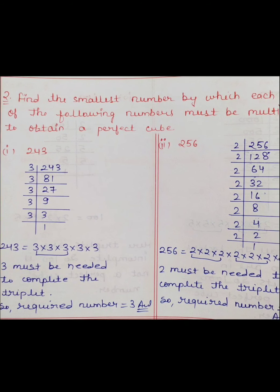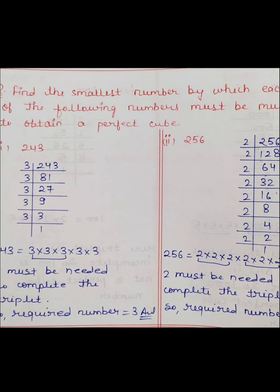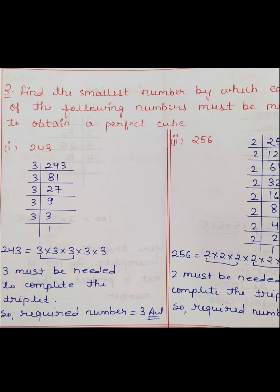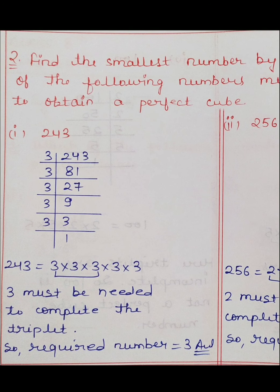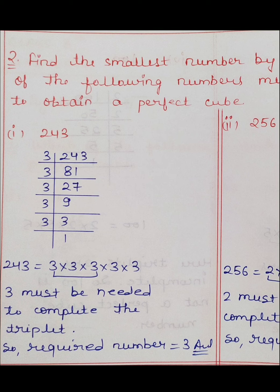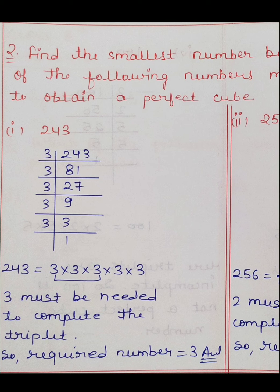Question number 2: Find the smallest number by which each of the following numbers must be multiplied to obtain a perfect cube। अब आपको वो smallest number बताना है जिसको multiply करने से दिए गए numbers perfect cube बन जाएं। Square and square root में हमने 2-2 की pairing ली थी, लेकिन यहाँ cube and cube root है, इसलिए यहाँ हम 3-3 की pairing लेंगे।